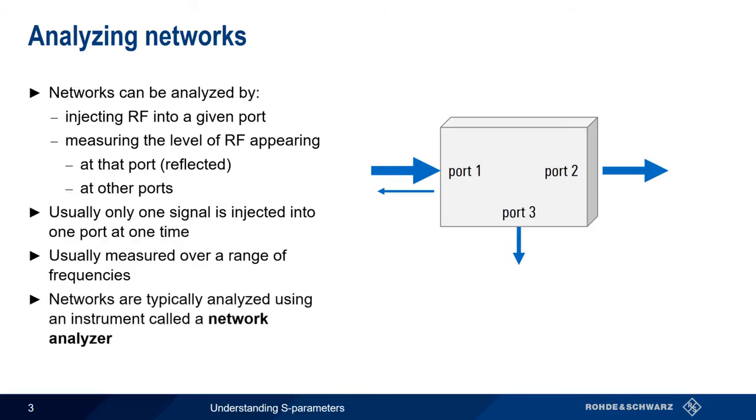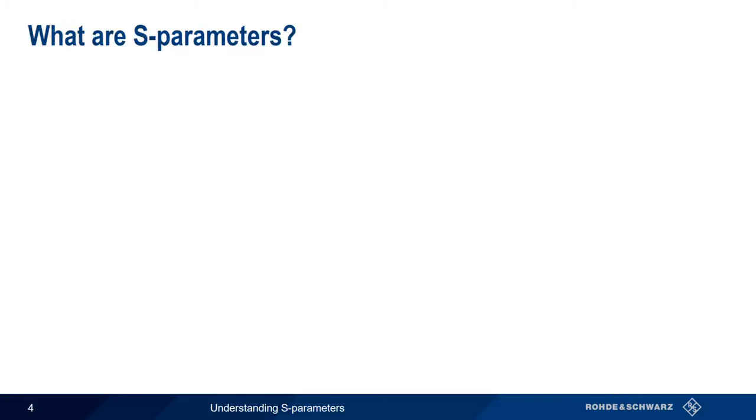In most cases, networks are analyzed using instruments called network analyzers. The most common way of representing these quantities is something called S-parameters. The S stands for scattering, since we're measuring how much RF is scattered back from, and out of, the various ports.